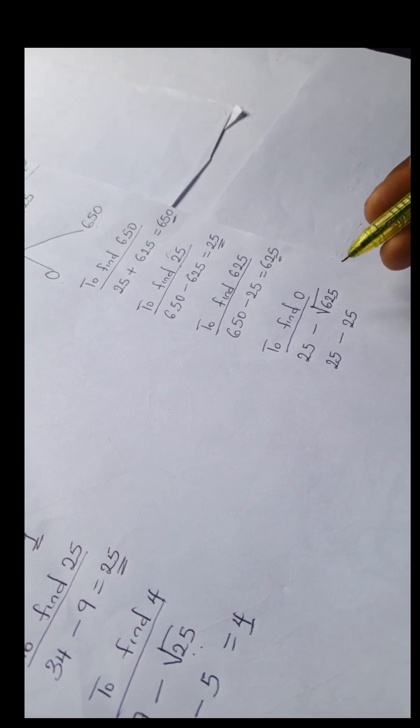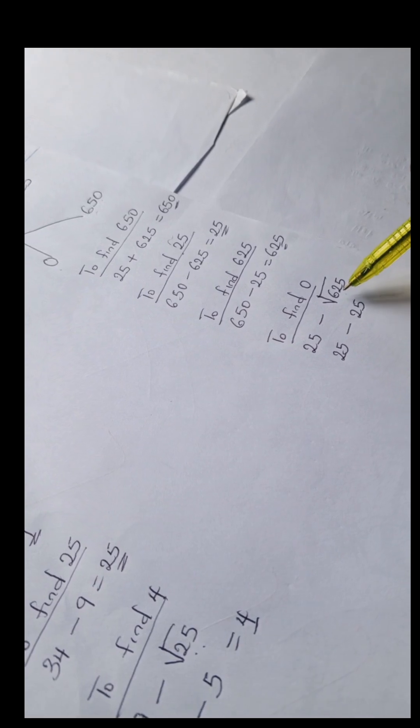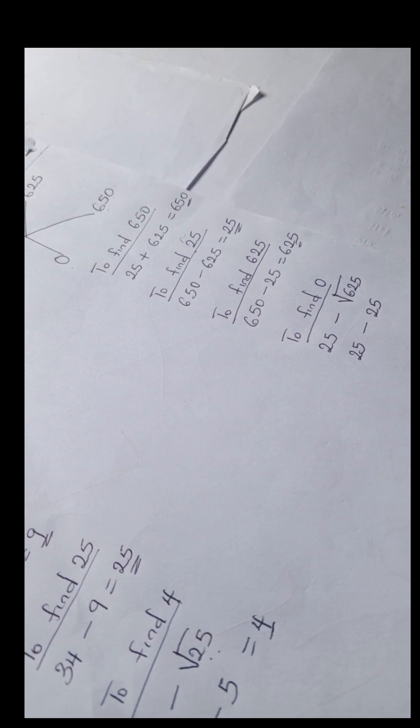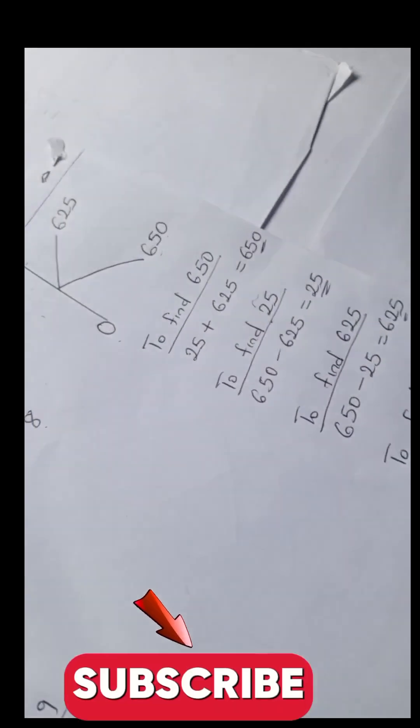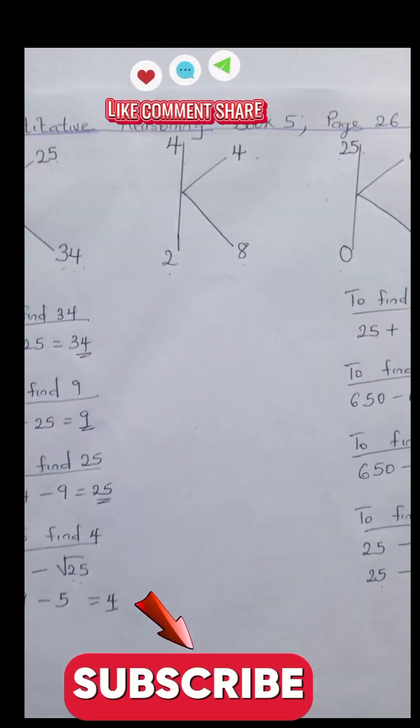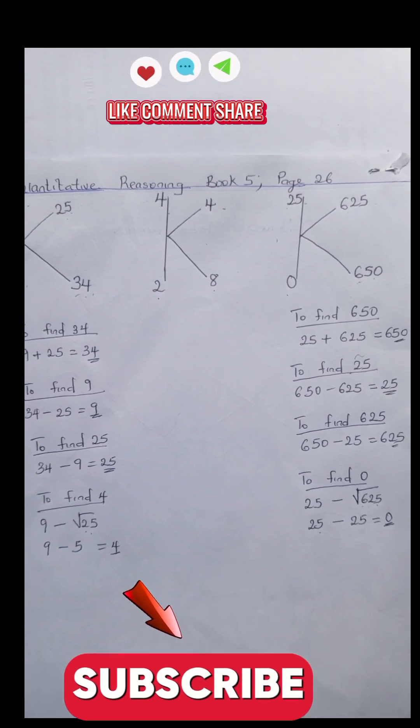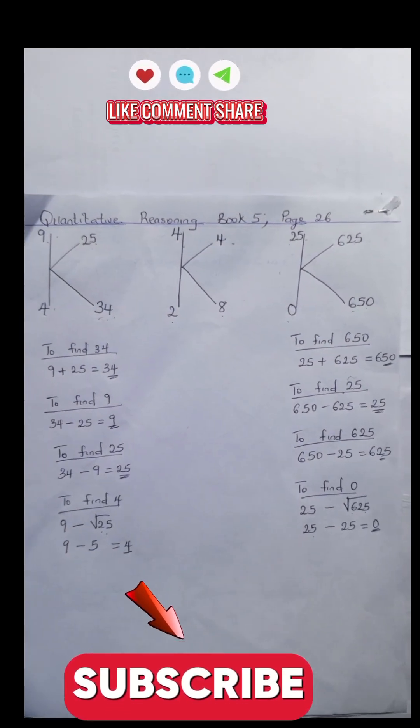Now, to understand perfect squares: 25 times 25 gives us 625, so the square root has to be the same number. Just like square root of 4 is 2, square root of 64 is 8, square root of 625 is 25. So 25 minus 25 leaves us with zero. All right, so don't forget to like and subscribe to this channel for more quantitative reasoning solutions and mathematics problems. Bye!